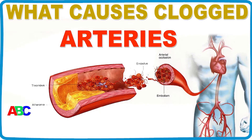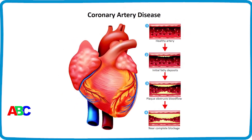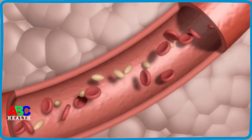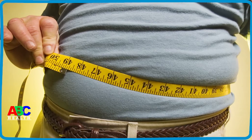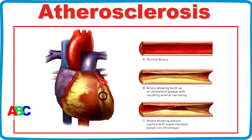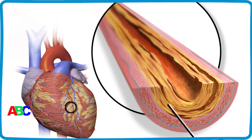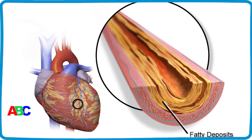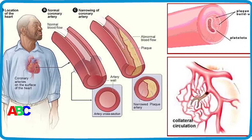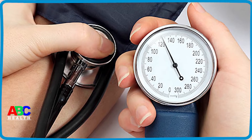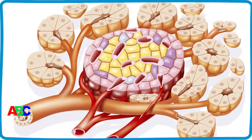What causes blocked arteries? Risk factors for coronary artery disease include high blood pressure, high cholesterol, tobacco use, diabetes, a strong family history of heart disease, or obesity. The development of atherosclerosis and coronary artery disease is thought to begin with damage or injury to the inner layer of the coronary artery, sometimes as early as childhood, caused by factors including smoking, high blood pressure, high cholesterol, diabetes or insulin resistance, and sedentary lifestyle.